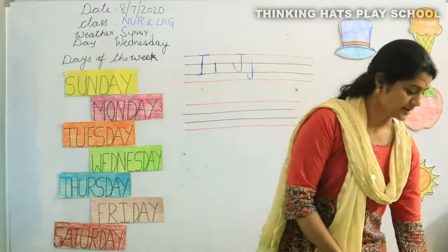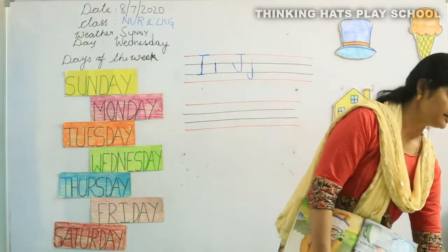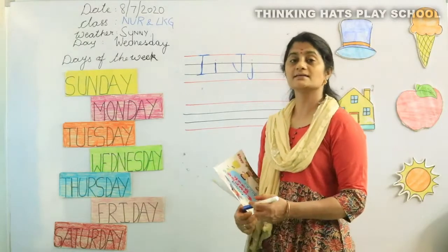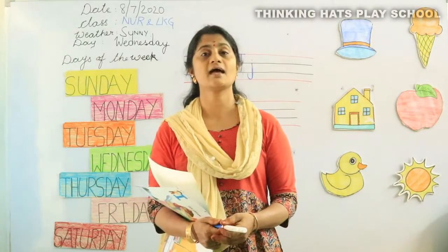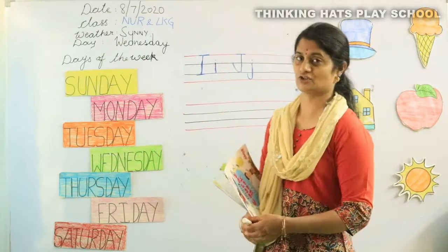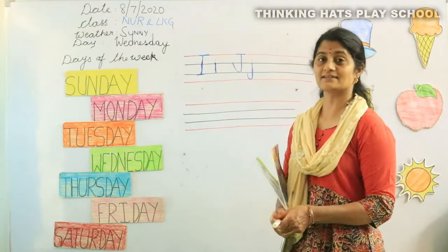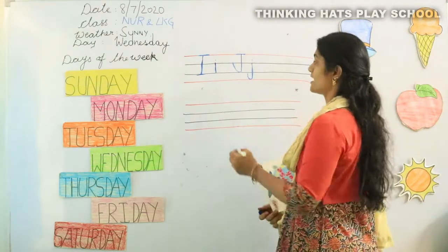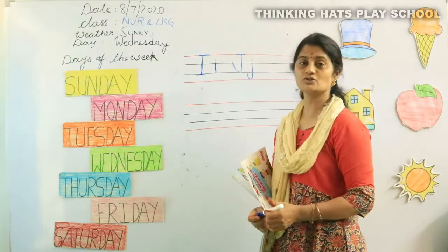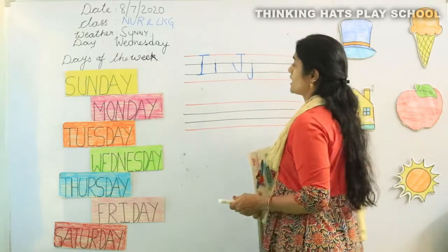Today we are going to learn the letter I. Remember we have already learnt A, B, C, D, E, F, G, H. So what comes after H? It is letter I. I for ice cream, igloo, inchworm, insect.